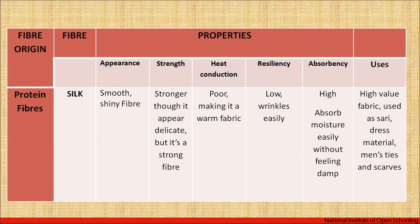Silk is a poor conductor of heat, making it a warm fabric suitable for the winter season. Resiliency is low — it wrinkles and creases easily. The absorbency is very high; it absorbs moisture easily without feeling damp. Fabrics that absorb moisture easily are more comfortable to wear. End uses of silk include high-value fabrics such as sarees, dress materials, men's ties, and scarves. Silk is a very expensive and luxurious fabric.